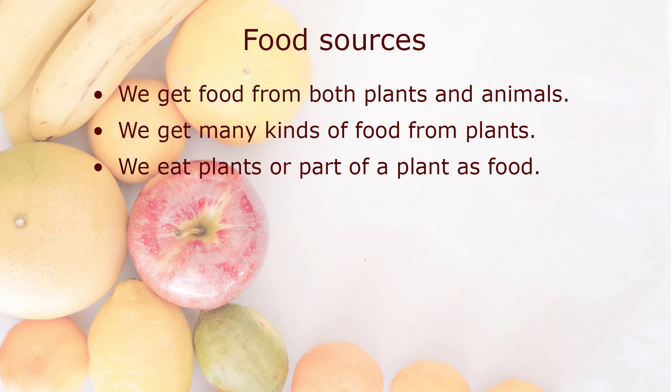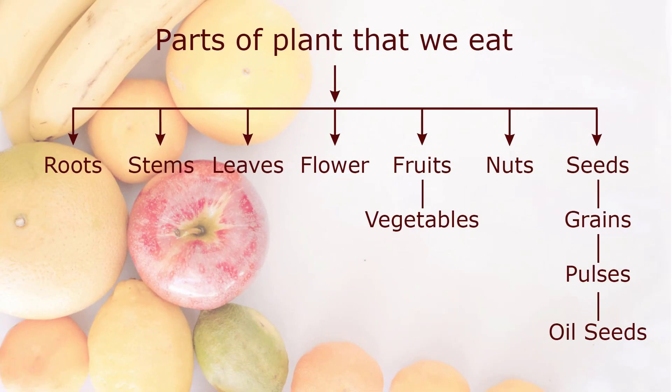Food sources. We get food from both plants and animals. We get many kinds of food from plants. We eat plants or parts of a plant as food. Parts of plants that we eat include: roots, stems, leaves, flowers, fruits, vegetables, nuts, seeds, grains, pulses, and oil seeds.